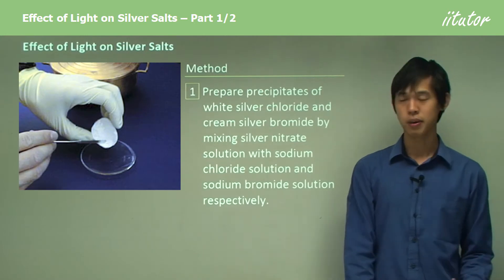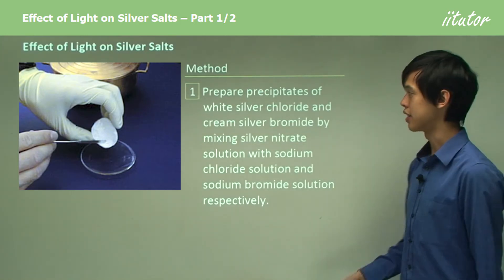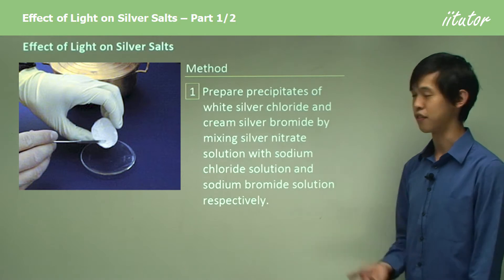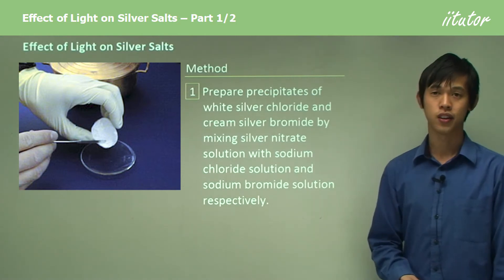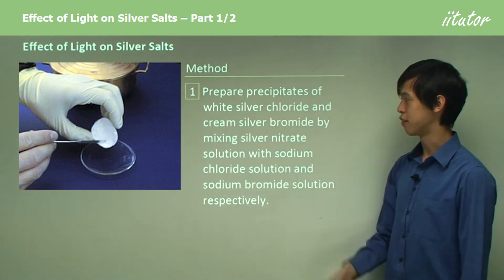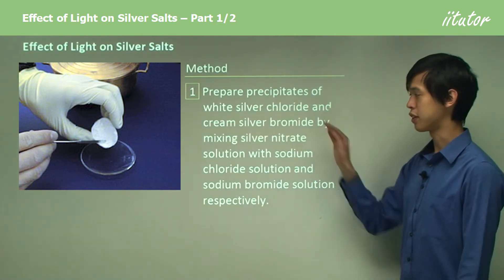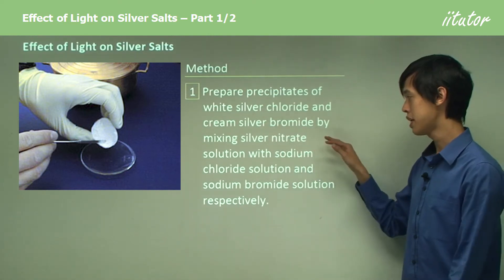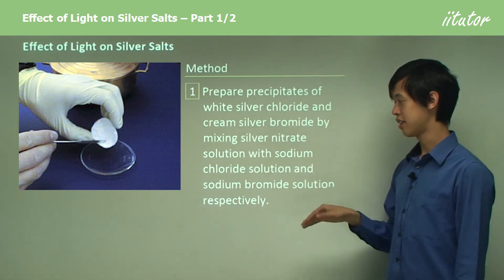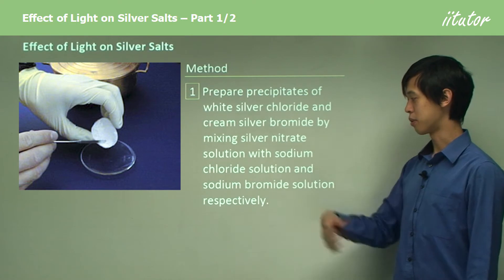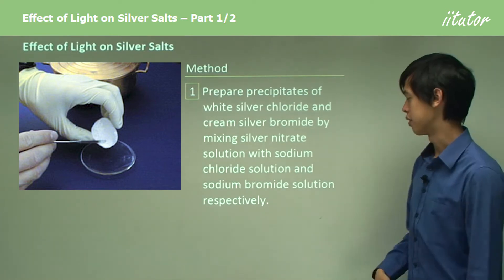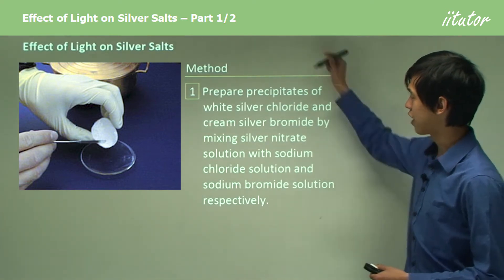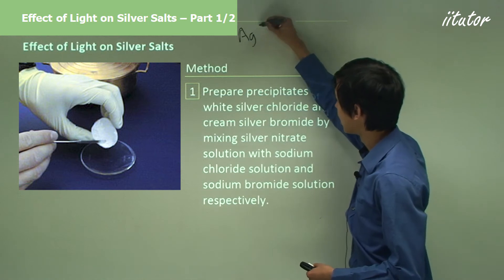The method we're going to use involves preparing precipitates of white silver chloride and cream-colored silver bromide by mixing silver nitrate with sodium chloride and sodium bromide solutions.